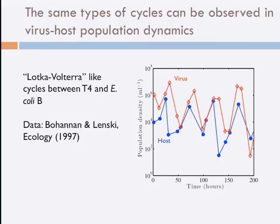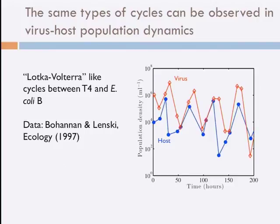Brendan Bohannan and Rich Lenski — you may know both of them for their current work, Brendan for microbiome work and Rich Lenski obviously for his long-term evolution experiment — also worked on simple model systems of E. coli and associated phage in chemostats, in about a ten-day experiment counting total population density. On the y-axis on a logarithmic scale, there can be two or more orders of magnitude difference in the total population of viruses versus that of their target microbial host, and there are oscillations. First host peak, then virus; first host, then virus; first host, then virus. To the extent there was a consensus, this was considered an example of Lotka-Volterra-like dynamics in a microbial system over a ten-day experiment.